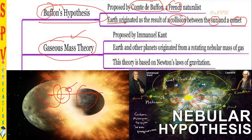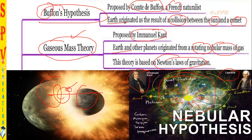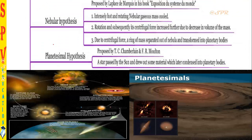The gaseous mass theory was proposed by Immanuel Kant, and the nebular hypothesis was proposed by Laplace de Marquis — both said similar things. Earth and other planets originated from a rotating nebular mass of gases. Because of gravitational attraction between the gaseous particles, they converted into matter and the earth and other planets were formed — based on a concept similar to Newton's law of gravitation.